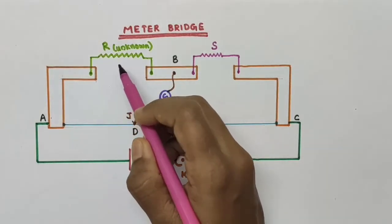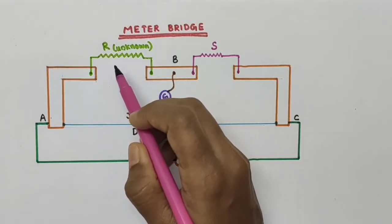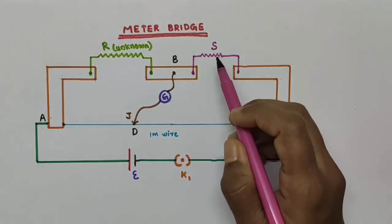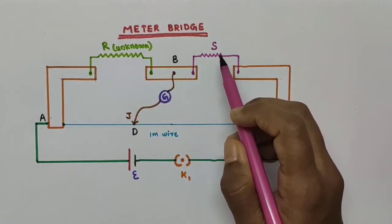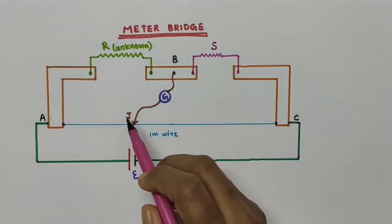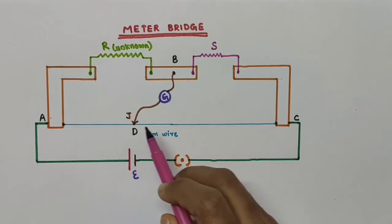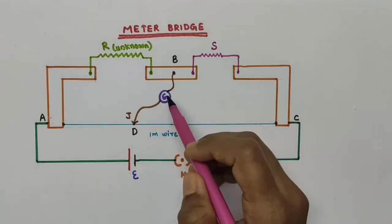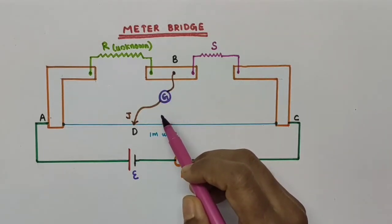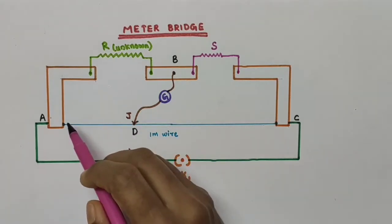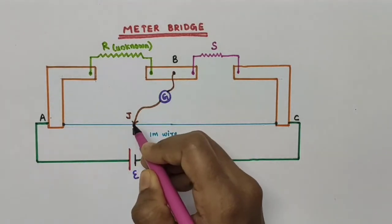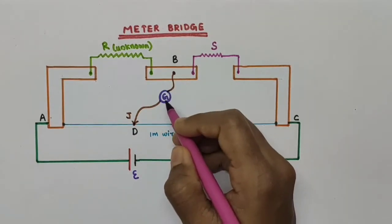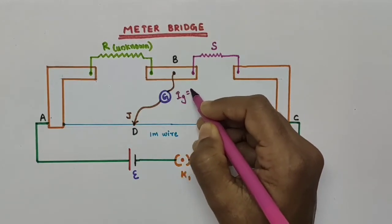R is the unknown resistance whose value is to be determined, connected across one of the two gaps. S is actually the standard resistance. This jockey can be moved along this wire, and there will be one particular position where the galvanometer shows no current. We are sliding this jockey over the wire, and when the jockey reaches point D, the galvanometer shows no deflection — that means galvanometer current IG becomes 0.